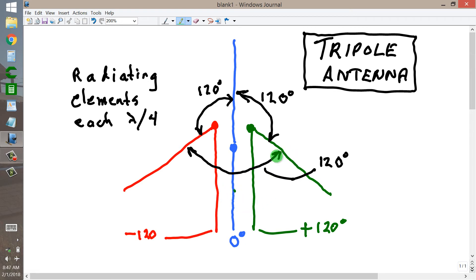These are angles, actual angles between the radiating elements. They all lie in a single plane, a quarter of a wavelength long blue radiating element, a quarter of a wavelength long green element, a quarter of a wavelength long red element, all in a single plane and separated by an angle 120 degrees each.